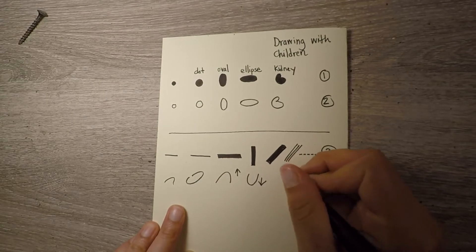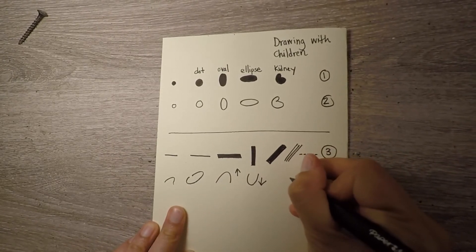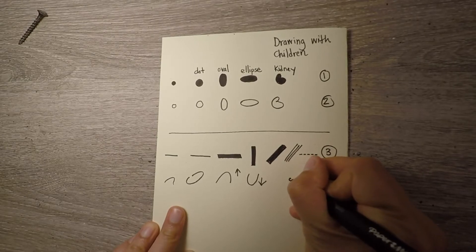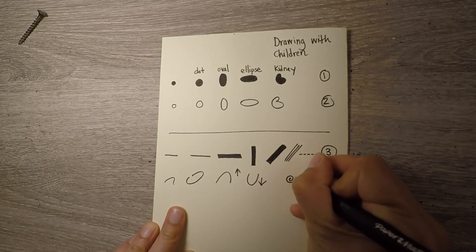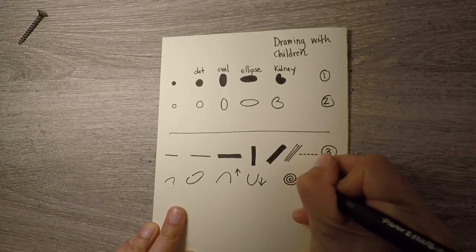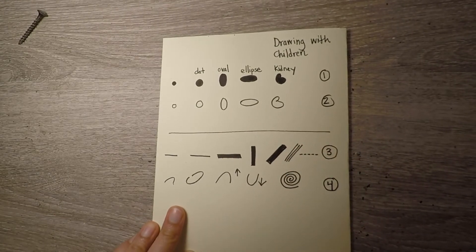We also have this one which is one of my favorites from this family, which is the spiral. So you start at one point and you do it by going tightly around from where you started. So that's the spiral.